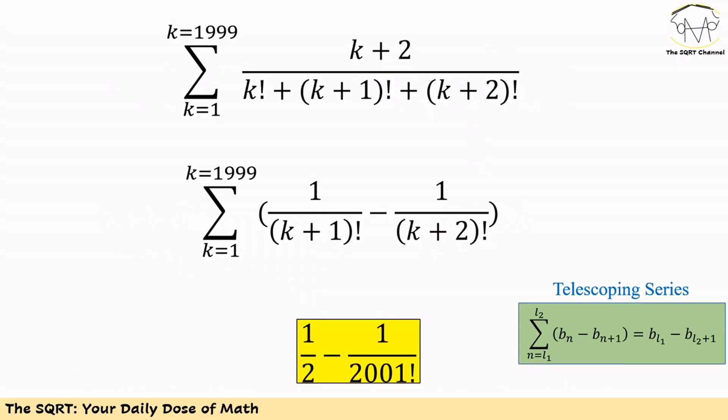Looking at the expression we obtained, we can see that this is a telescoping series. Therefore the final result is 1 over 2 factorial minus 1 over 2001 factorial, which is 1/2 minus 1/2001 factorial. That's our final answer. Thanks for watching the video — if you would like to see more puzzles and math-involved activities, please subscribe to the channel.